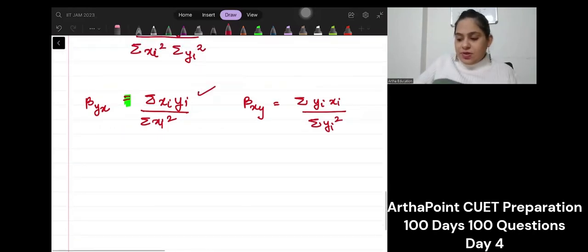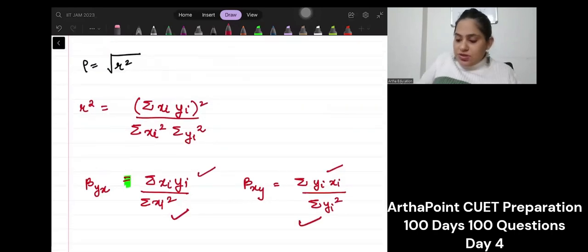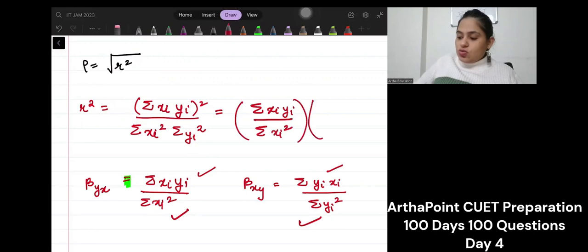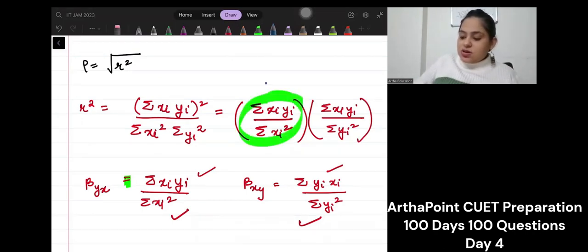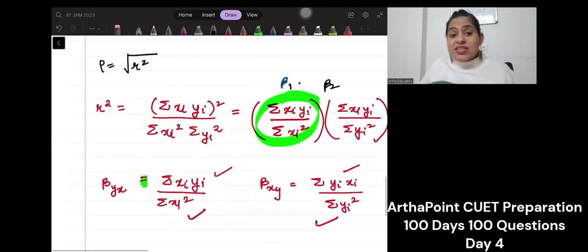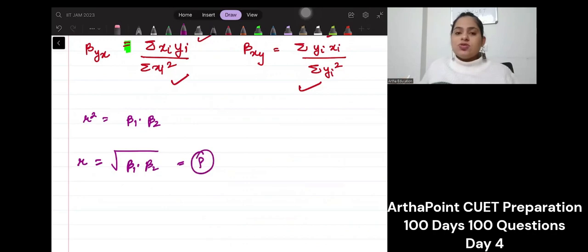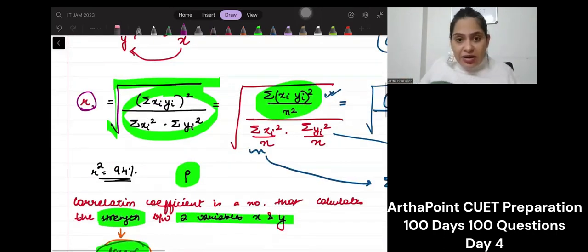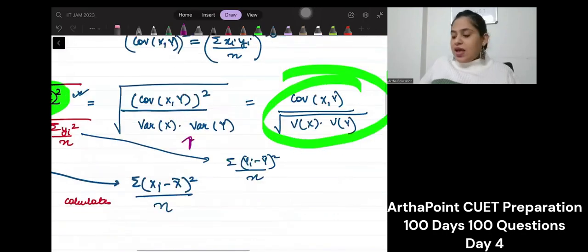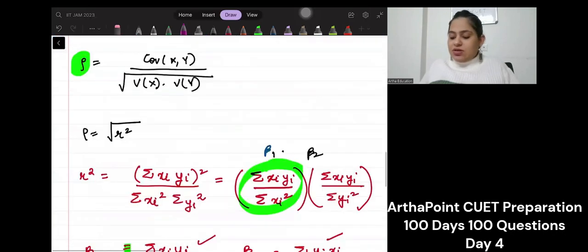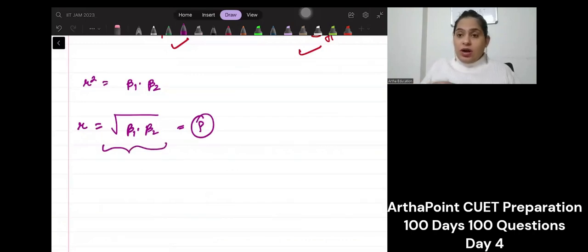So if I were to open this r square, can I say this as summation xi yi by summation xi square into summation xi yi by summation yi square. But this part is just beta 1, and this part is just beta 2. So I can say that r square is beta 1 into beta 2. So what will be r? Under root of beta 1 into beta 2. This is correlation coefficient. This is what we proved - that r, which is under root of r square, gives you the same formula as that of correlation coefficient, and that r can be rewritten as the root of the product of the two slopes.